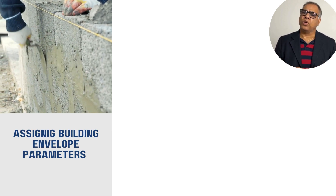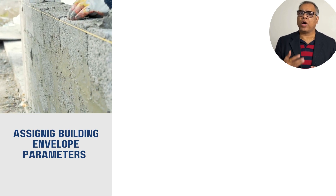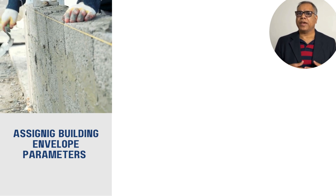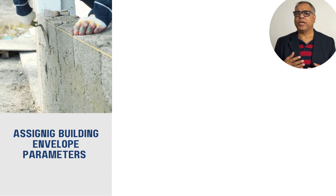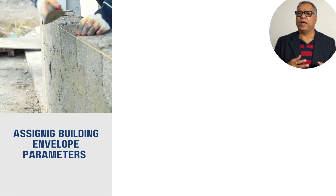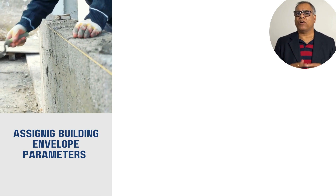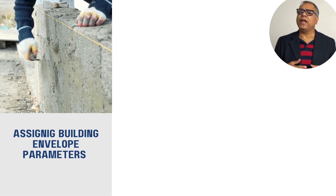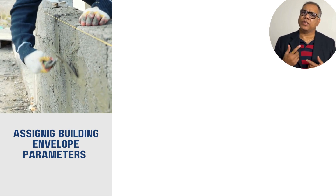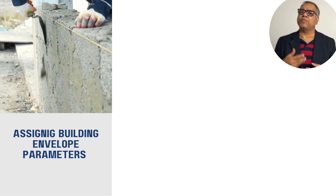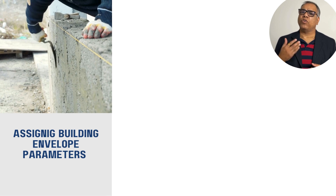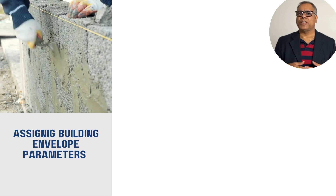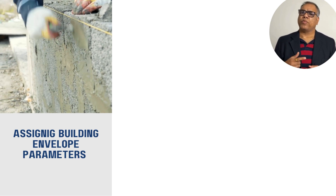Once you have created the building geometry, the next part is assigning the properties of your building. This includes heat transfer properties like U-value, wall thickness, and the type of materials used. Each material has its own property, and you have to consider the overall impact of various materials like plaster, brickwork, and again plaster, as well as the roof, glass, and any envelope element in the building.